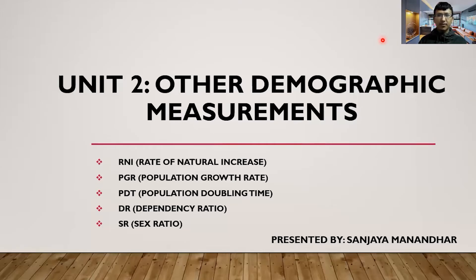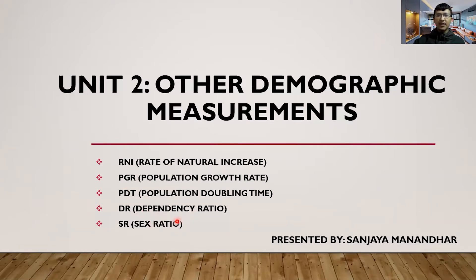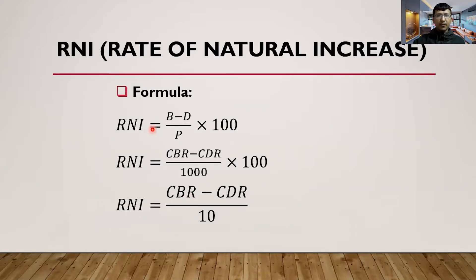Welcome students. Today we are going to discuss different demographic measurements. We've finished fertility, mortality, and migration measurements. Now we will cover other demographic measurements: RNI (Rate of Natural Increase), PGR (Population Growth Rate), PDT (Population Doubling Time), DR (Dependency Ratio), and SR (Sex Ratio).